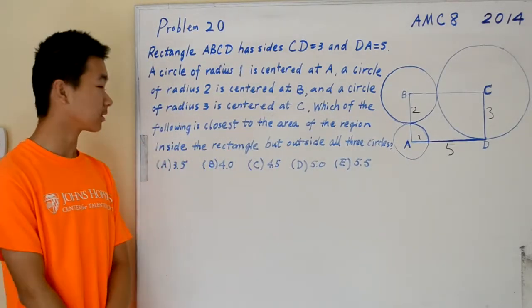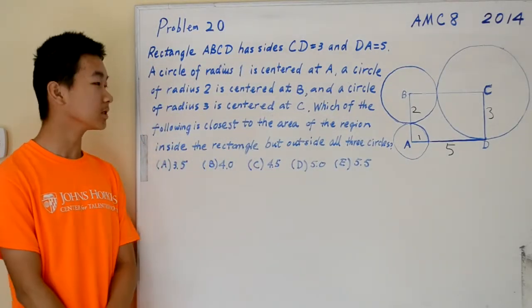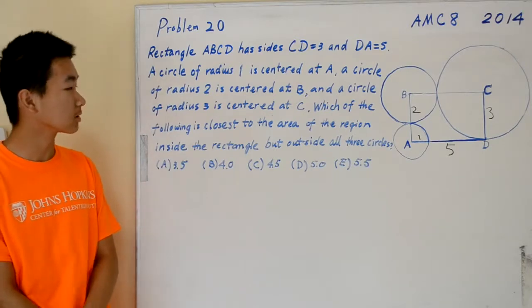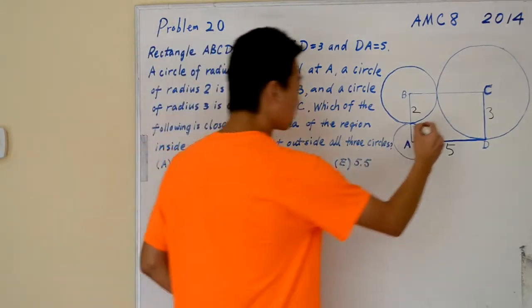Which of the following is closest to the area of the region inside the rectangle but outside all three circles? The region we're looking for is this one.